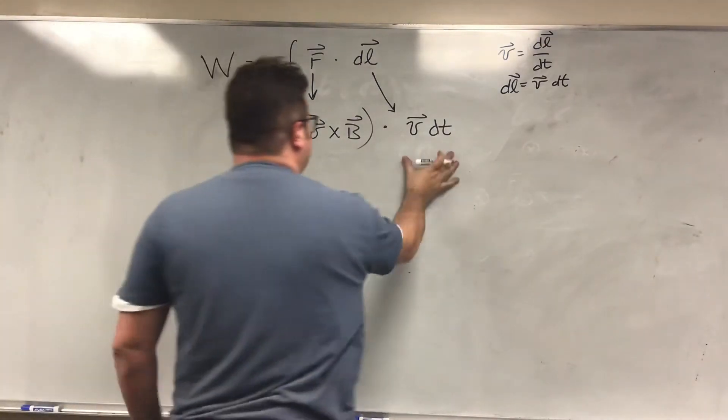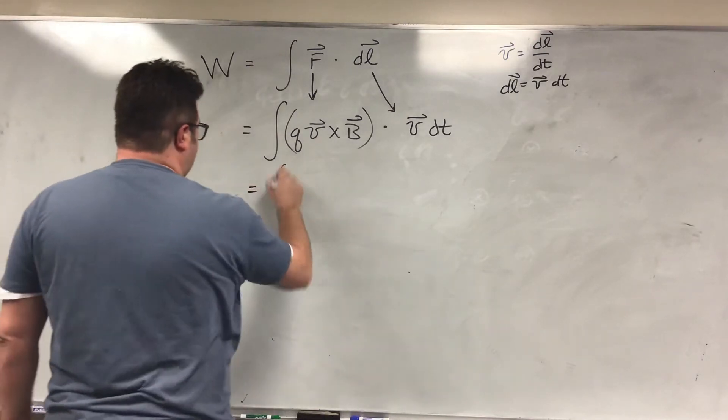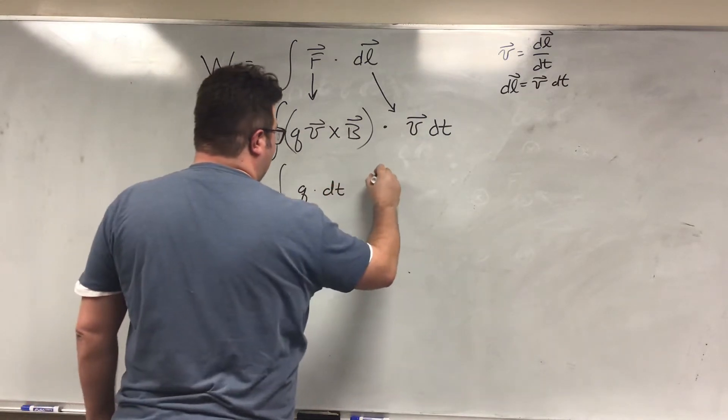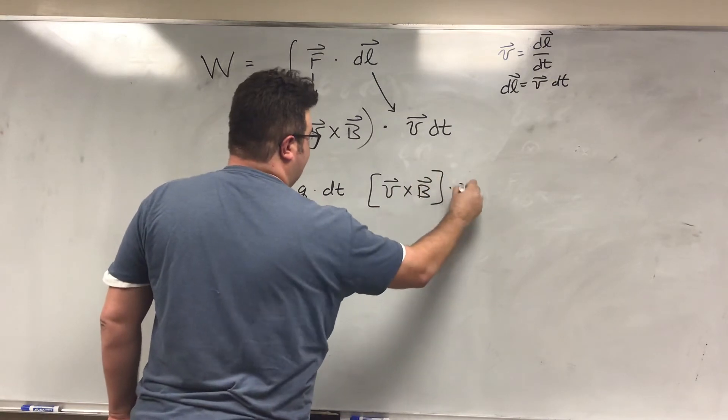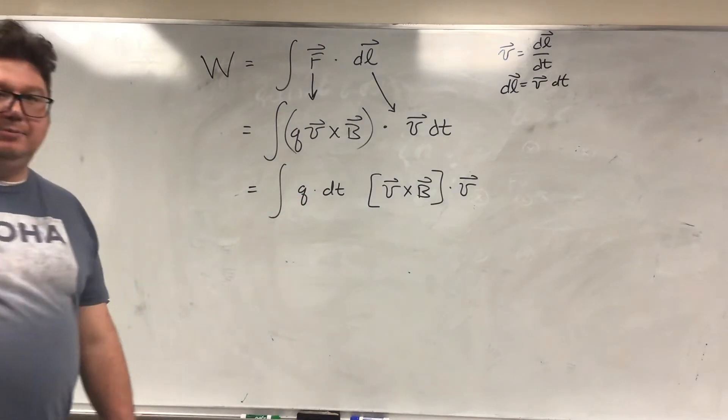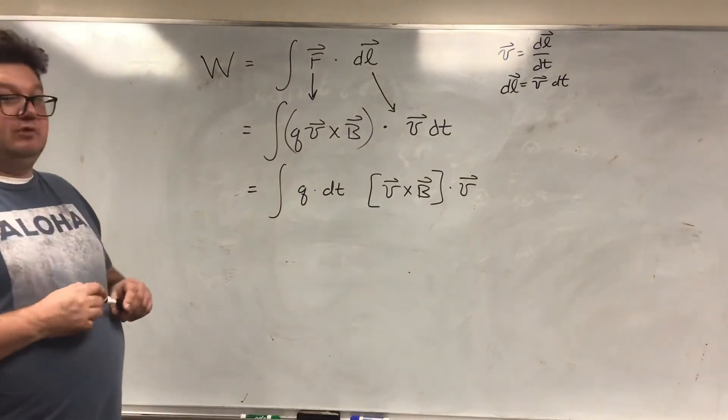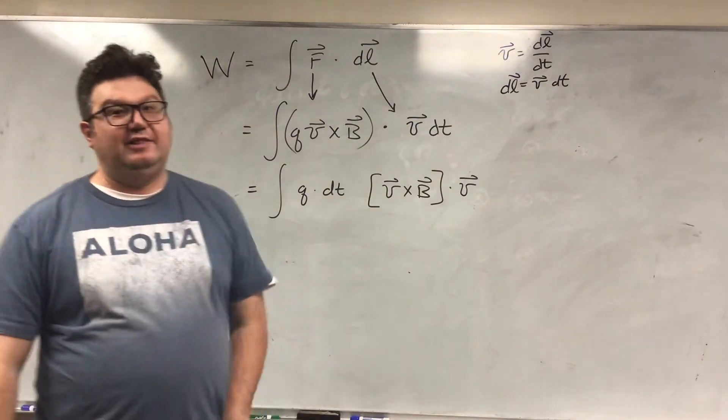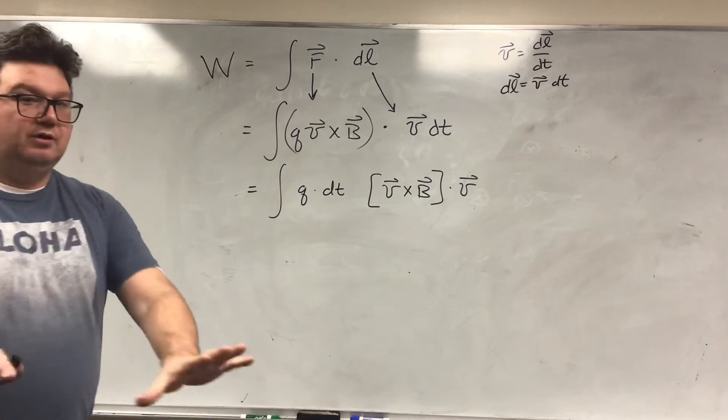All right, so I plug that in. And that gives me some ridiculous vector quantity. So Q DT is equal to V cross B dot V. Okay, so this is some scalar quantity. We'll have to look at it. There's a ton of ways to do this. I would just look at this and immediately see that V cross V is zero. But let's do a proof.